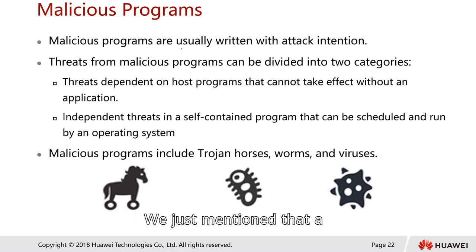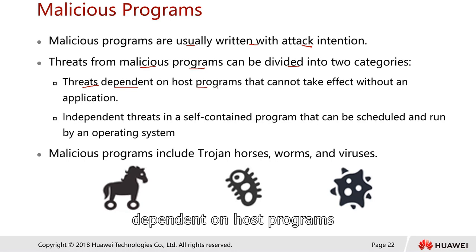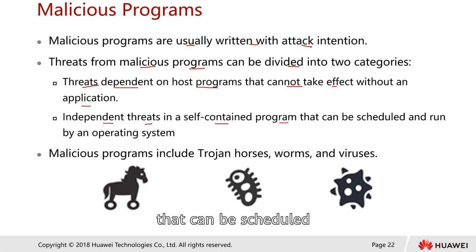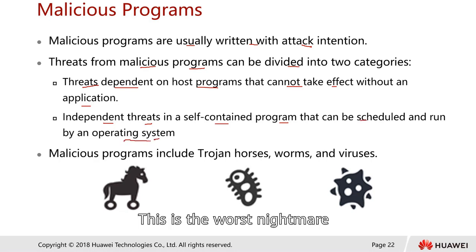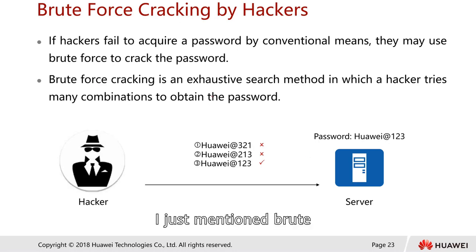Malicious programs are usually written with attack intention. They can be divided into two categories: threats dependent on a host program, which require a parent application to trigger the malicious code, and independent threats, which are self-contained programs that can be scheduled and run by the operating system — the worst nightmare. Examples include Trojan horses, worms, and viruses.